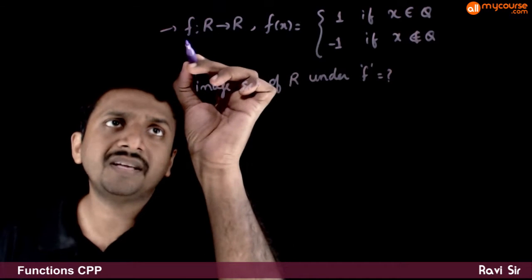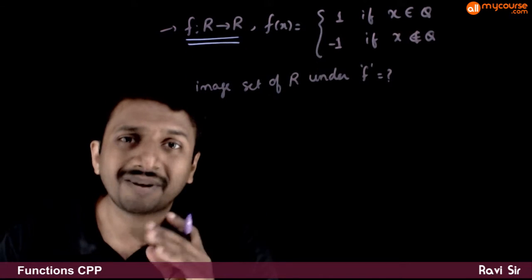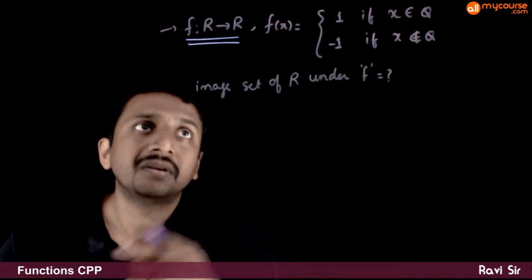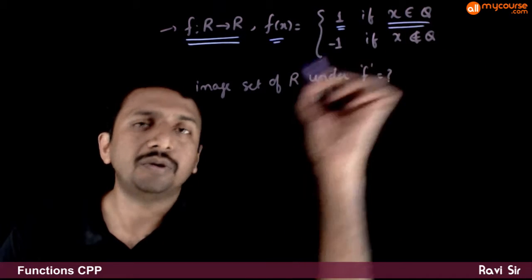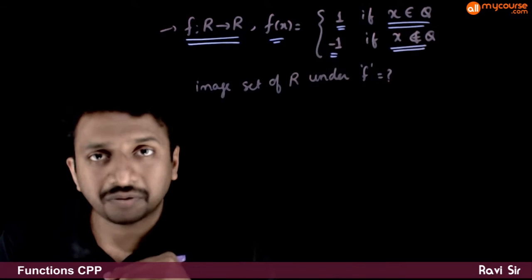So, in this question, you have given that f is a function defined from real numbers to real numbers and f(x) is equal to 1 if x belongs to Q, minus 1 if x does not belong to Q.